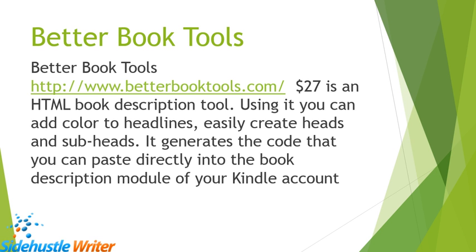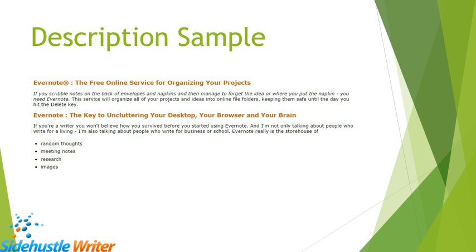This is absolutely not necessary — I just wanted to mention it in case somebody wanted to know how to do that. Here's an example from one of my books. As you can see, I've used the Better Book Tools tool to color my headlines with the same orange that Amazon uses in their headlines. So betterbooktools.com — you don't need it, but it's an option.